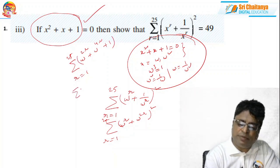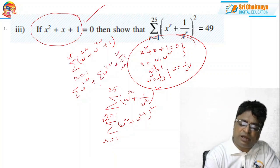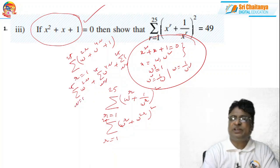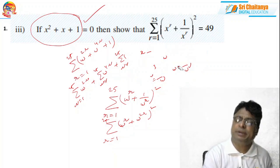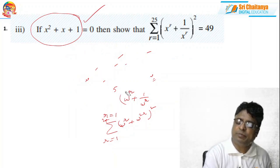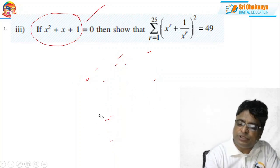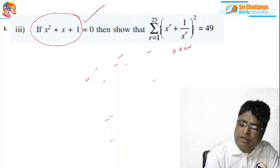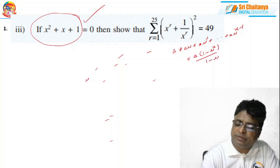Separate the sigma: this becomes Σω²ʳ + Σω⁴ʳ + Σ1, each from r = 1 to 25. Each of the first two sums is a geometric progression. Recall the GP sum formula: a + ar + ar² + … + arⁿ⁻¹ = a(1 − rⁿ)/(1 − r). You know this formula well and will apply it to each sigma term.